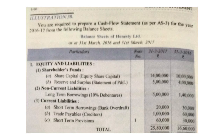Now move on to the balance sheets of Honesty Limited as at 31st March 2016 and 31st March 2017. Particulars are given. 2016 is the previous year, 2017 is the current year. Under equity and liabilities, shareholders' funds — share capital: equity share capital was rupees 10 lakh in 2016 and is now 14 lakh. It means share capital has been issued.